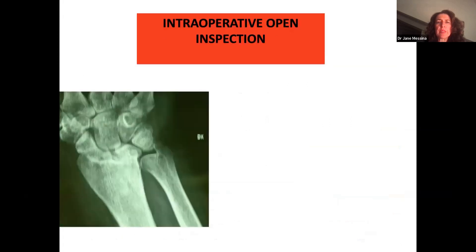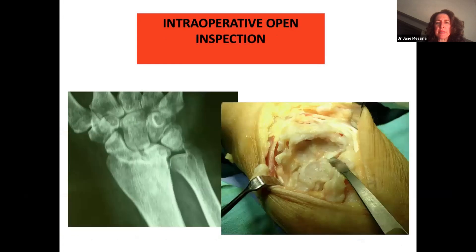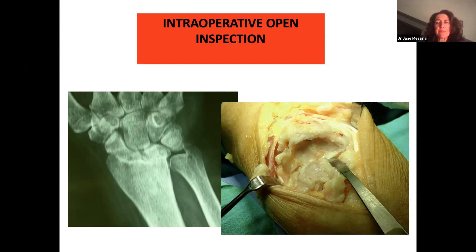When performing an intraoperative open inspection, once the joint is widely open and you inspect the mid-carpal joint, you have already committed to a standard open procedure and cannot go back to a conservative one. Moreover, the radiocarpal joint is not easy to visualize in its entirety in the open field, because it is restricted within the concavity of the radius and difficult to fully visualize.